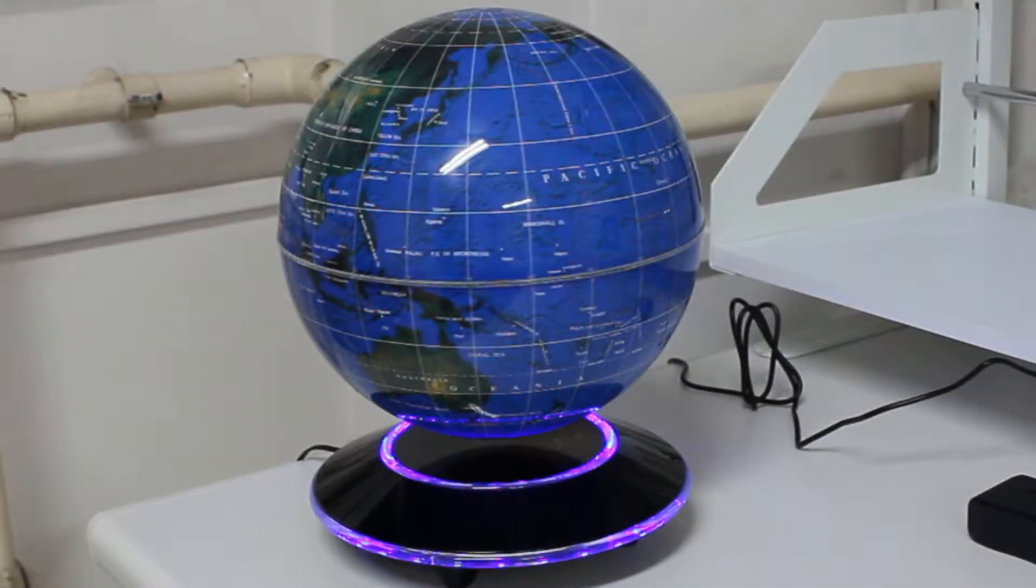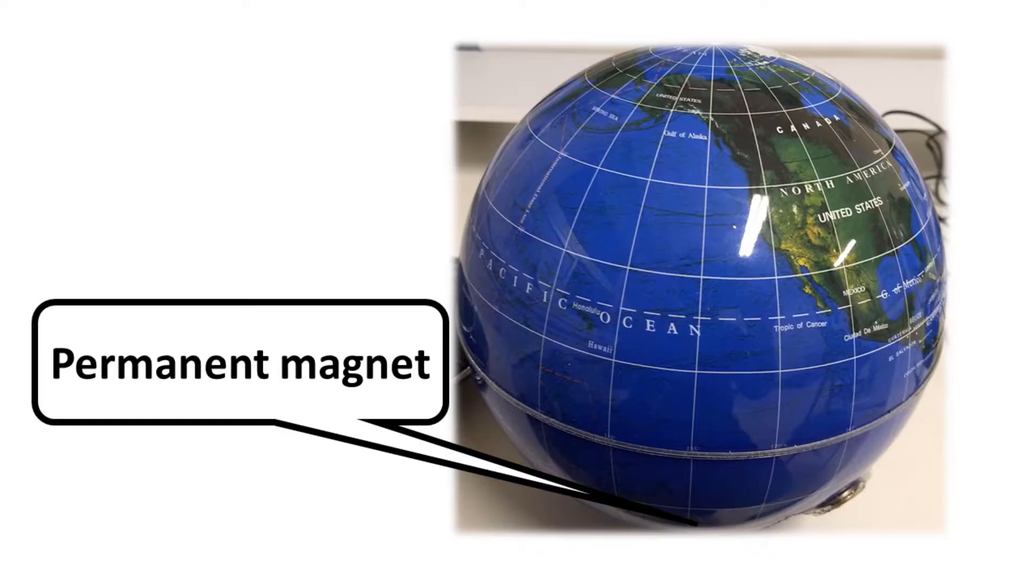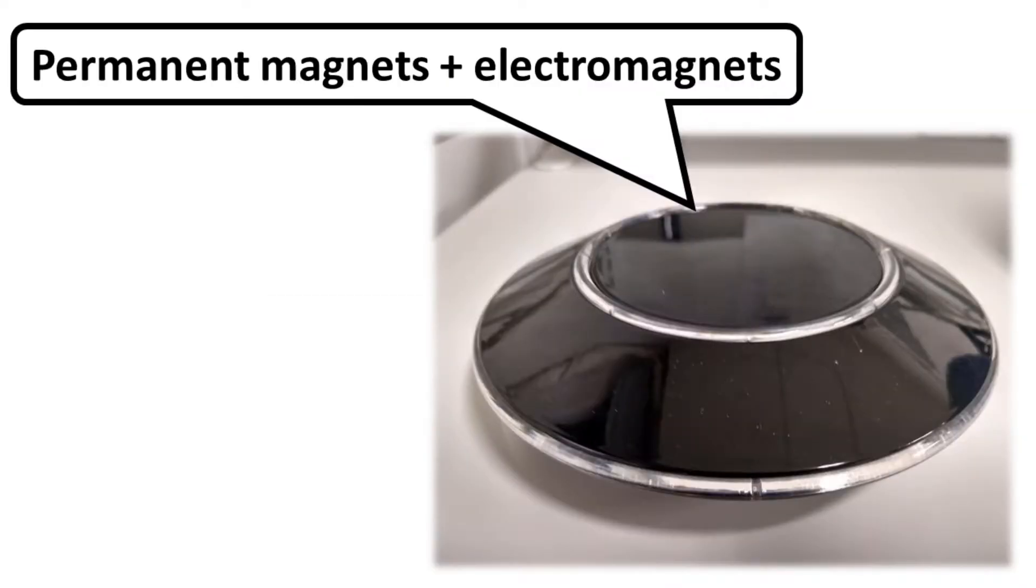This is our experimental setup. This plastic globe has a very strong permanent magnet strategically placed in the bottom part. The round base has permanent magnets and electromagnets inside.